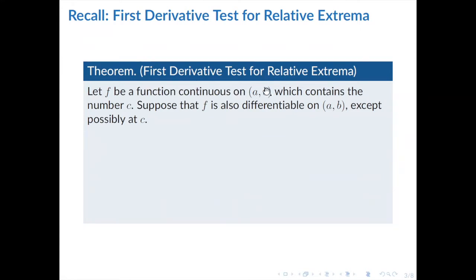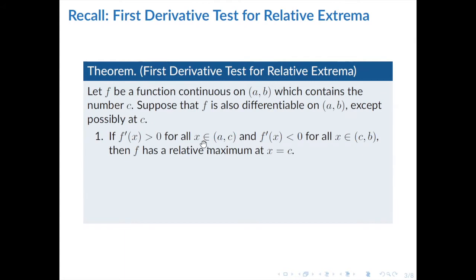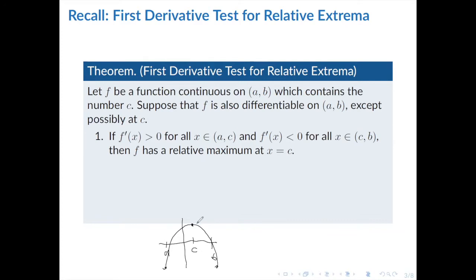We also have the first derivative test for relative extrema. It says that if f is a function continuous on the open interval from a to b which contains the number c, and if f is differentiable on that interval except possibly at c, then if f prime is positive for all x in the left portion of the interval and negative for all x in the right portion, then f has a relative maximum at c. A good example is a downward-opening parabola — the derivative is positive on the left and negative on the right, giving a relative maximum at c.